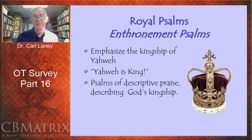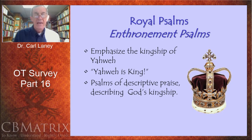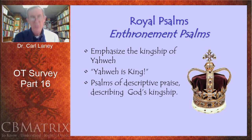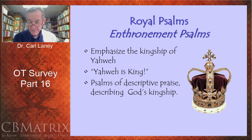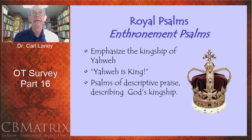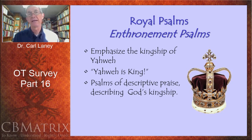The next category are the Royal Psalms, also called the Enthronement Psalms. These Psalms emphasize the kingship of the Lord himself — God's kingship. What the Psalmist sees is that Yahweh reigns: he's sitting on his throne, ruling over creation. The Psalmist declares: Yahweh is king, the Lord is king. Westermann points out that the basis of these Psalms is descriptive praise — we're describing God as king — and this praise is expanded by the declaration of God's kingship.